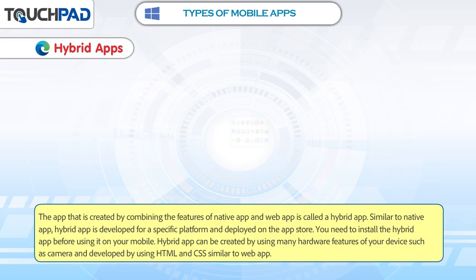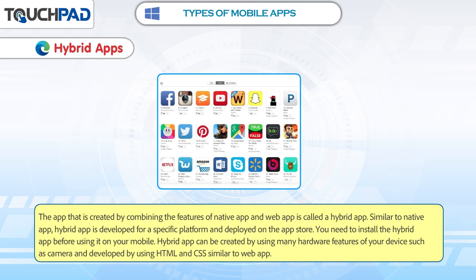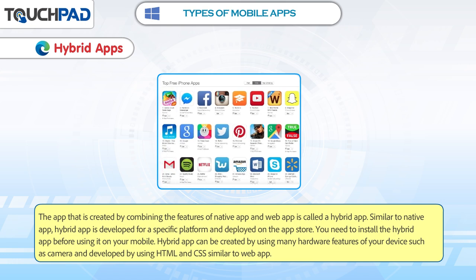Hybrid Apps. The app that is created by combining the features of native app and web app is called a hybrid app. Similar to native app, hybrid app is developed for a specific platform and deployed on the app store. You need to install the hybrid app before using it on your mobile. Hybrid app can be created by using many hardware features of your device such as camera, and developed by using HTML and CSS similar to web app.